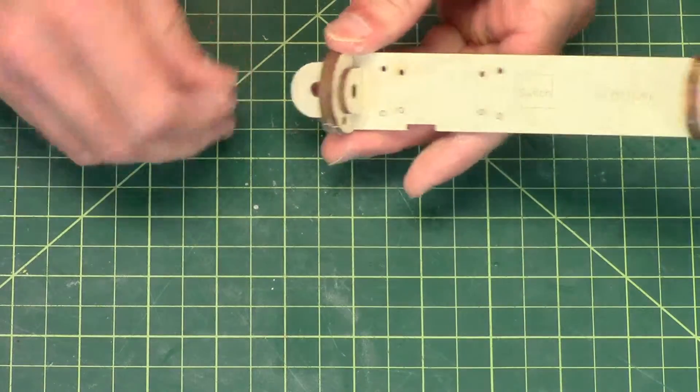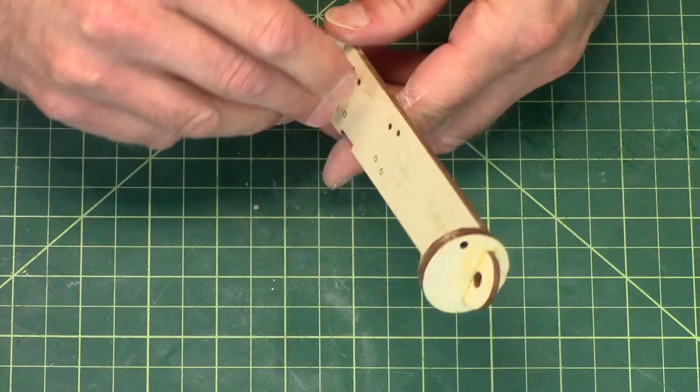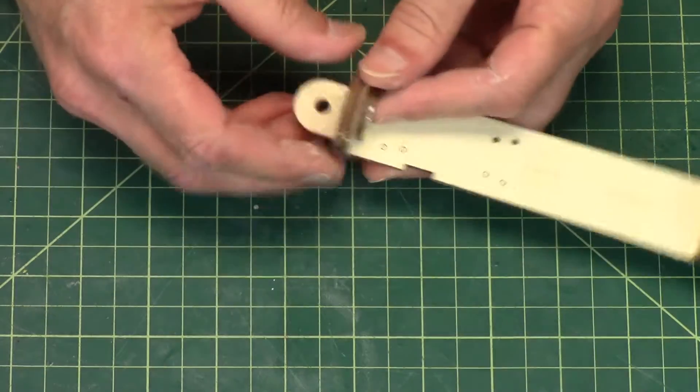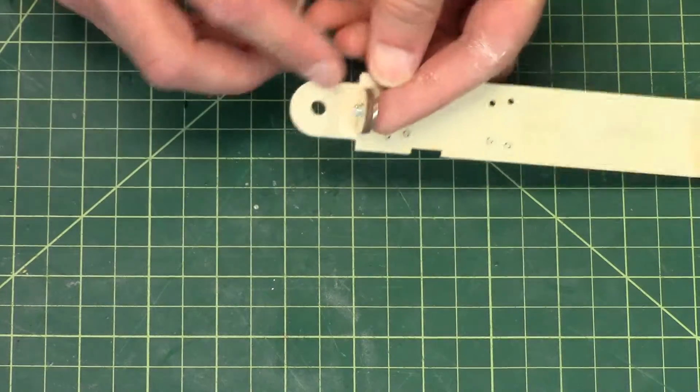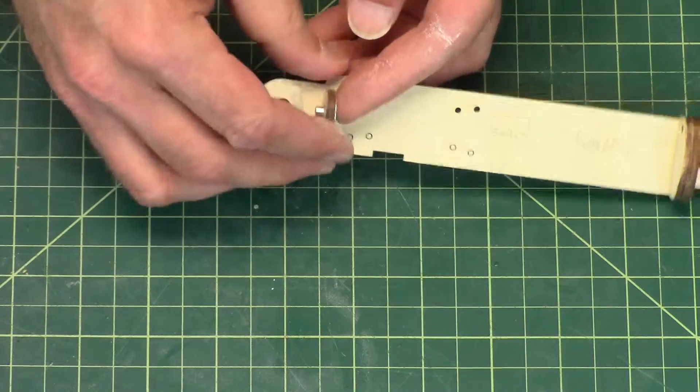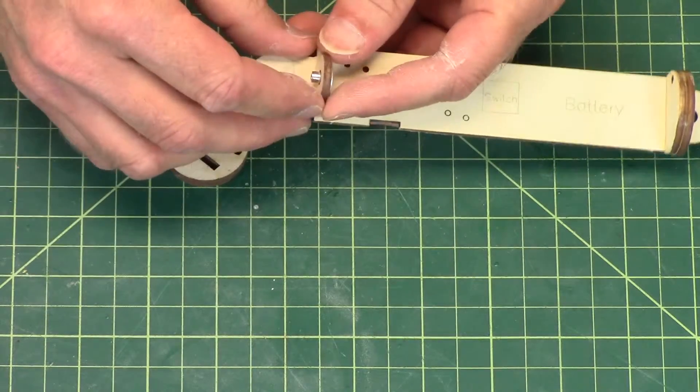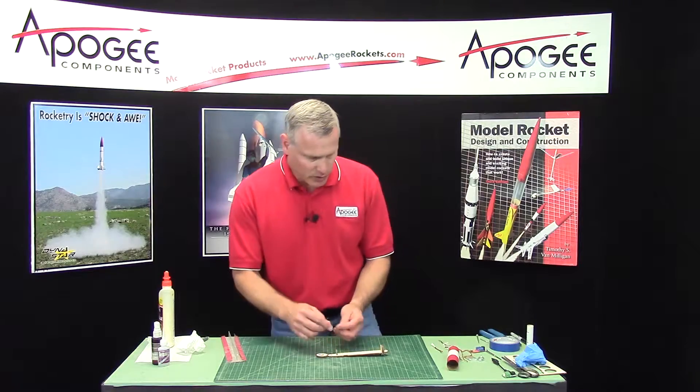Test fit that on there and then take the weld nut and test fit it into the hole. If you don't have that on there, this weld nut might not center up correctly, so that's why we want to test fit.